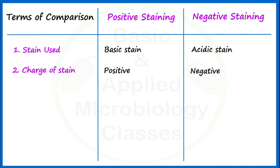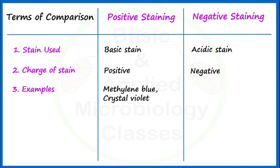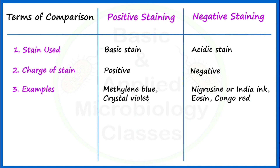The third point of difference is examples. For positive staining, always remember methylene blue and crystal violet — these are the most common basic staining reagents used in the microbiology laboratory on a routine basis to perform positive staining. For negative staining, nigrosin or India ink is one of the most commonly used acidic stains. In addition, eosin and Congo red are also very good examples of acidic staining reagents.